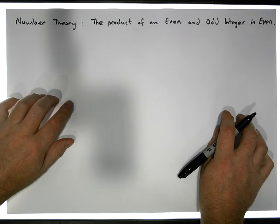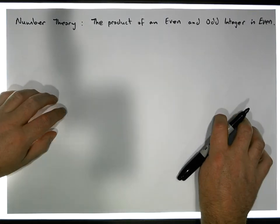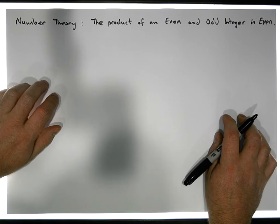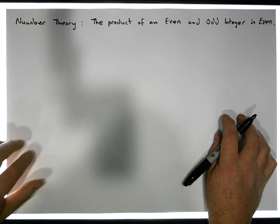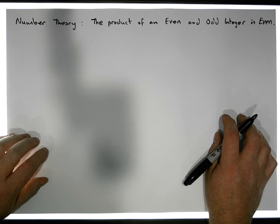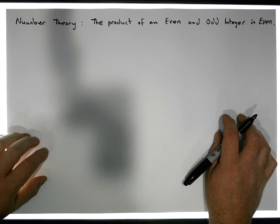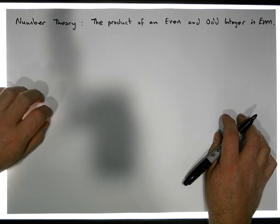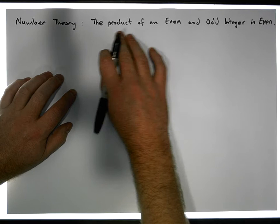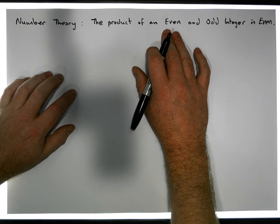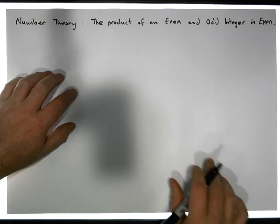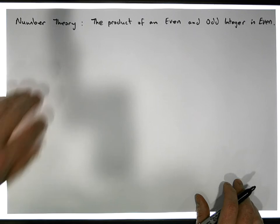Hi guys, this is Jonathan Lambert with the Mathematics Development and Support Service at National College of Ireland. This is another video in our series dealing with number theory and, more importantly, divisibility of the integers. This video is going to show that the product of an even integer with an odd integer is in fact an even integer.